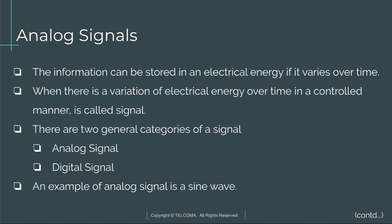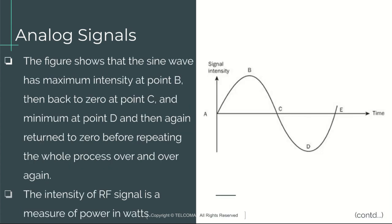Next is analog signals. Information can be stored in electrical energy if it varies over time. A variation of electrical energy over time in a controlled manner is called a signal. There are two general categories: analog signal and digital signal. An example of an analog signal is a sine wave. This figure shows that the sine wave has maximum intensity at point B, then back to zero at point C, and minimum at point D, then returns to zero before repeating.